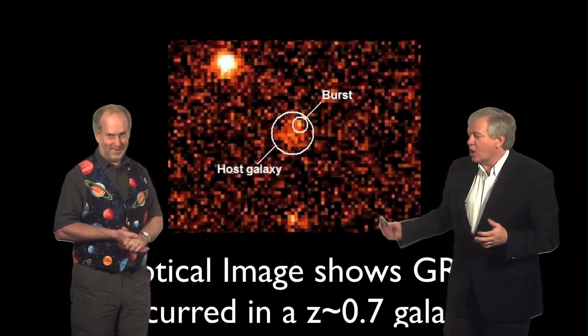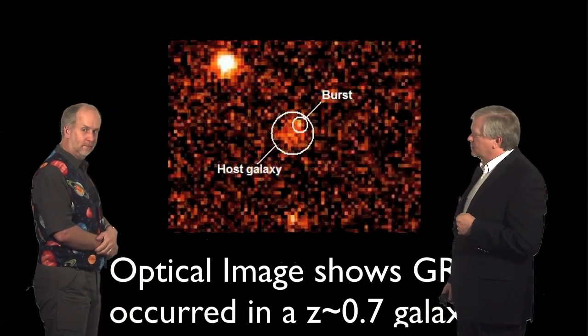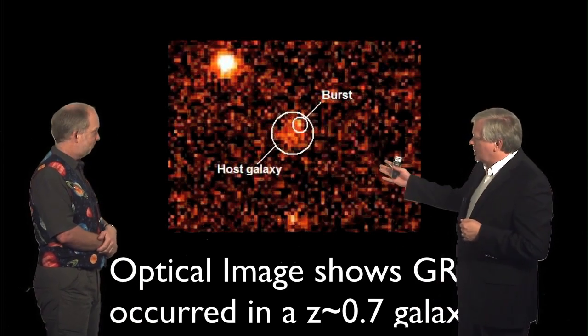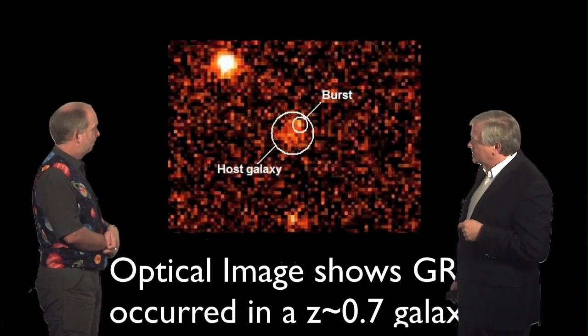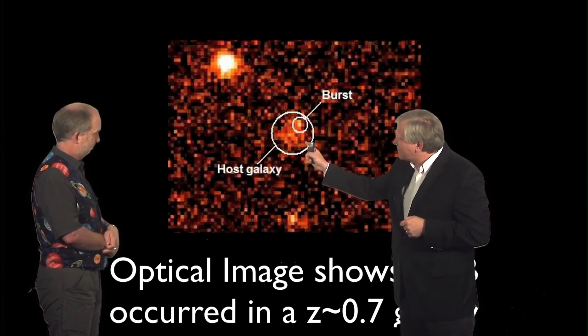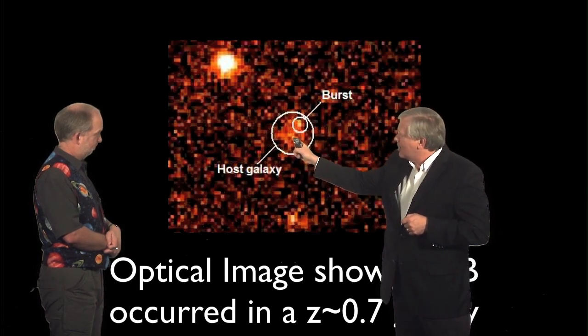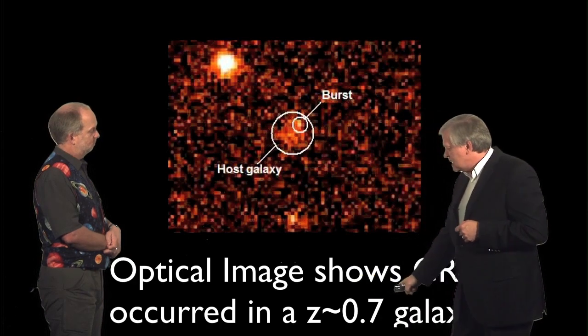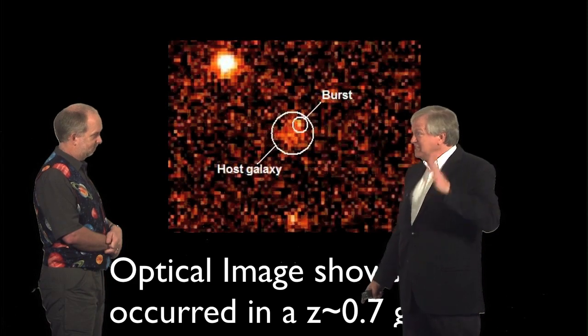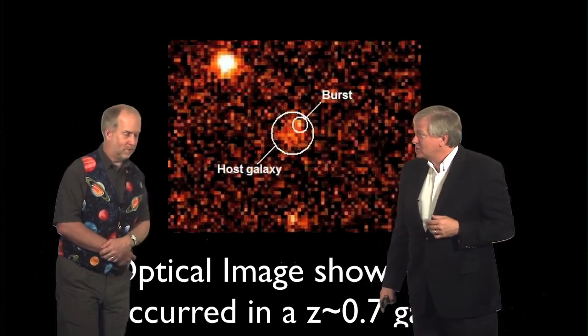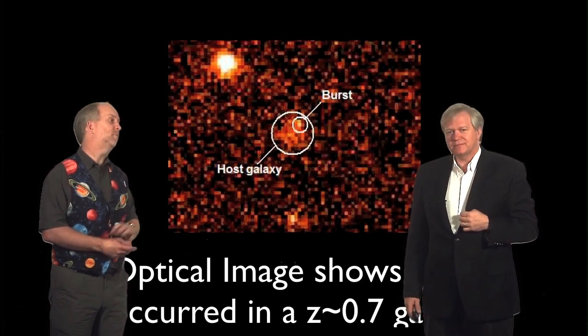And when they were able to go through and isolate this object, which they did with the William Herschel telescope, and then they were able to look at it in detail with the Hubble Space Telescope, once they had identified it, this is what they saw. They saw a little fuzzy galaxy and the gamma ray burst occurred on the edge of a distant galaxy, a galaxy at a red shift of 0.7. So that's like six billion light years in distance. So, wow. Wow. I mean, that many gamma rays from something that far away, it must be incredibly luminous.